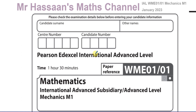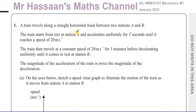So without further ado, I'm going to go through question number one. Question one is about a train which travels along a straight, horizontal track between two stations A and B. The train starts from rest at station A and accelerates uniformly for T seconds until it reaches a speed of 20 meters per second. It then travels at a constant speed of 20 meters per second for three minutes before decelerating uniformly until it comes to rest at station B. The magnitude of the acceleration is twice the magnitude of its deceleration. We need to sketch a speed-time graph to illustrate the motion.